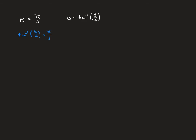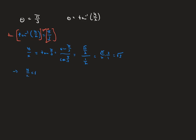Our goal is to get y equal to a function of x. To get rid of the inverse tangent, we take the tangent of both sides. The tangent of an inverse tangent cancels out, leaving y over x on the left. The tangent of pi over three equals sine pi over three over cosine pi over three, which is square root of three over two divided by one half, giving us square root of three. So y over x equals the square root of three.